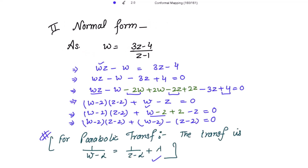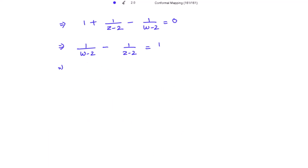Equivalently, 1/(w - 2) = 1/(z - 2) + 1, where λ = 1. This is the required normal form.